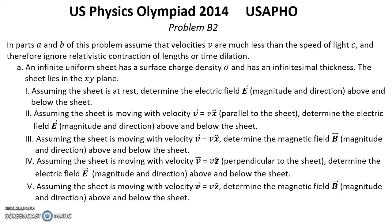Question 3: Assuming the sheet is moving with velocity V in the X direction, determine the magnetic field B magnitude and direction above and below the sheet.